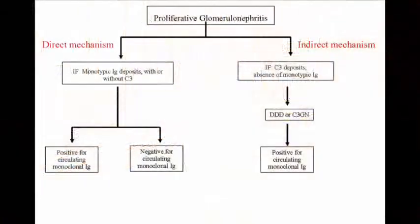So in a sense, there are two arms to the monoclonal immunoglobulin causing a proliferative glomerulonephritis. One is the direct mechanism, where the monoclonal immunoglobulins are deposited in the kidney. The second is the indirect arm, where the monoclonal immunoglobulin acts as a mini autoantibody to one of the complement-regulating proteins and causes proliferative glomerulonephritis.